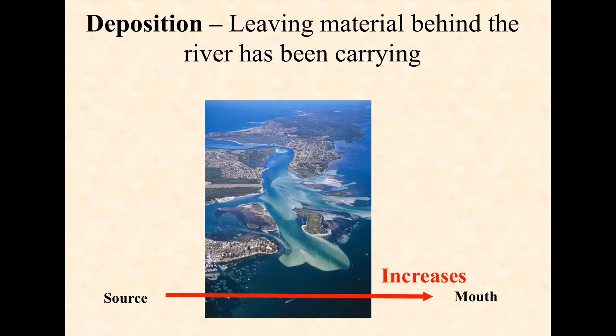Just like transportation, deposition — the leaving behind of material — follows the same trend. In the lower course of the river, this is where you get the most deposition, and this is how estuaries and deltas form. So again, deposition increases as you move from source to mouth.